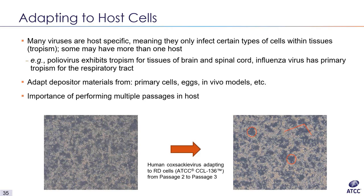Another virus I am currently working with is the human coxsackievirus. This virus was deposited to ATCC in 1969 and was propagated in the brain and limbs of suckling mice. I am attempting to adapt this virus to ATCC through CCL-136 RV cells, or human muscle cells. As you can see by attempting a third passage after my second one, the CPE of the virus has substantiated, with more prominent spots of monolayer degeneration as well as much more cell clumping and rounding.